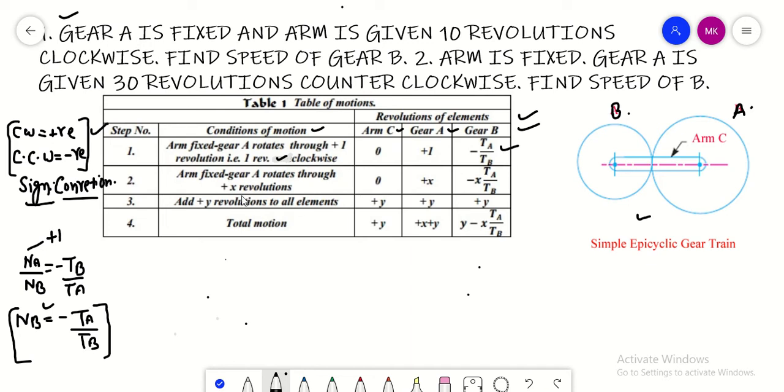Similarly, the second case: arm is fixed, gear A is given a rotation of plus X revolution clockwise. It means it is positive. Again, arm is fixed so it is zero.